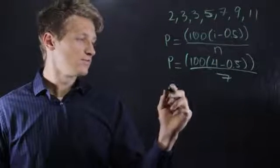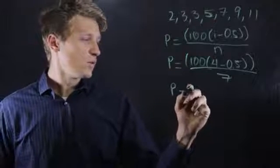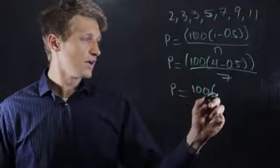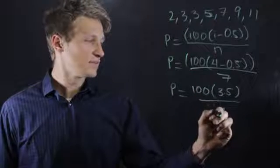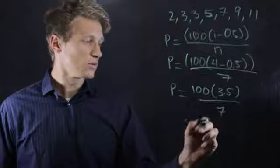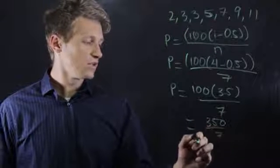And then we solve that out. So here we have p equals 100 times 3.5 divided by 7, which equals 350 divided by 7, which equals 50.